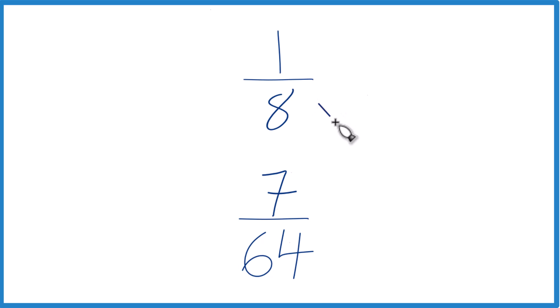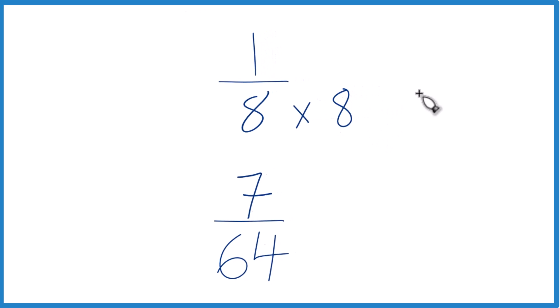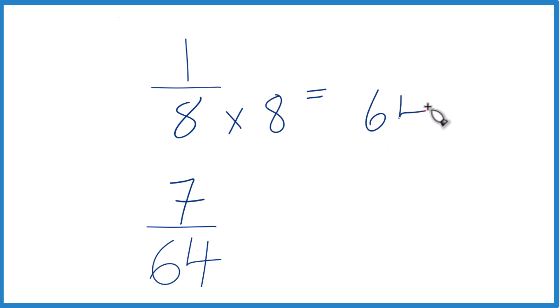Why don't we do this? Why don't we multiply 8 times 8? Because 8 times 8 equals 64, so now our denominator is 64. Down here we already have 64, we're going to keep this the same, same denominator.